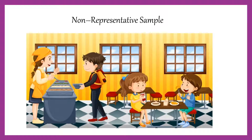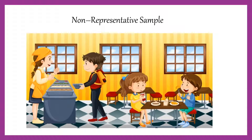Consider this example: if you want to study the eating habits of students in a university campus and you use a sample consisting of only male students, then it is not a representative sample, because the campus will have both male and female students. So that is a non-representative sample. A proper sample should be a subset of the population and should be representative.